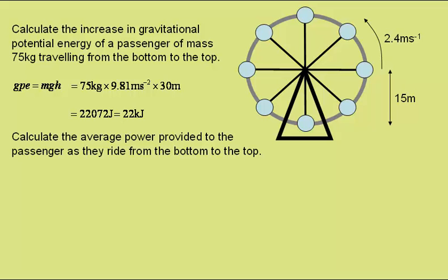Next, to calculate the average power provided to the passenger as they ride from the bottom to the top. Well, power is equal to work done over time taken or energy transferred over time taken which in this case is the 22072 joules provided to the passenger divided by the time taken, half of the 39 seconds to do the complete circle of 19.5 seconds giving a power of 1132 watts or 1.1 kilowatts.